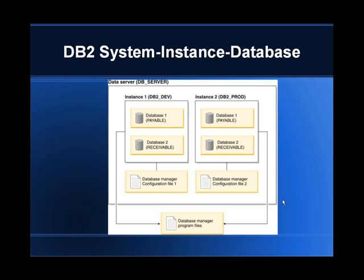This slide talks about the architectural view of the database. You have one physical server — the DB server — on which you install the DB2 software product. What you get when you install is database manager program files: a set of binaries. After installing the product, you need to create instances. For example, here there are two instances — Instance 1 and Instance 2 — both pointing to the same database manager program files, meaning they use the same set of binaries. They are just runtime entities of the installed binaries.